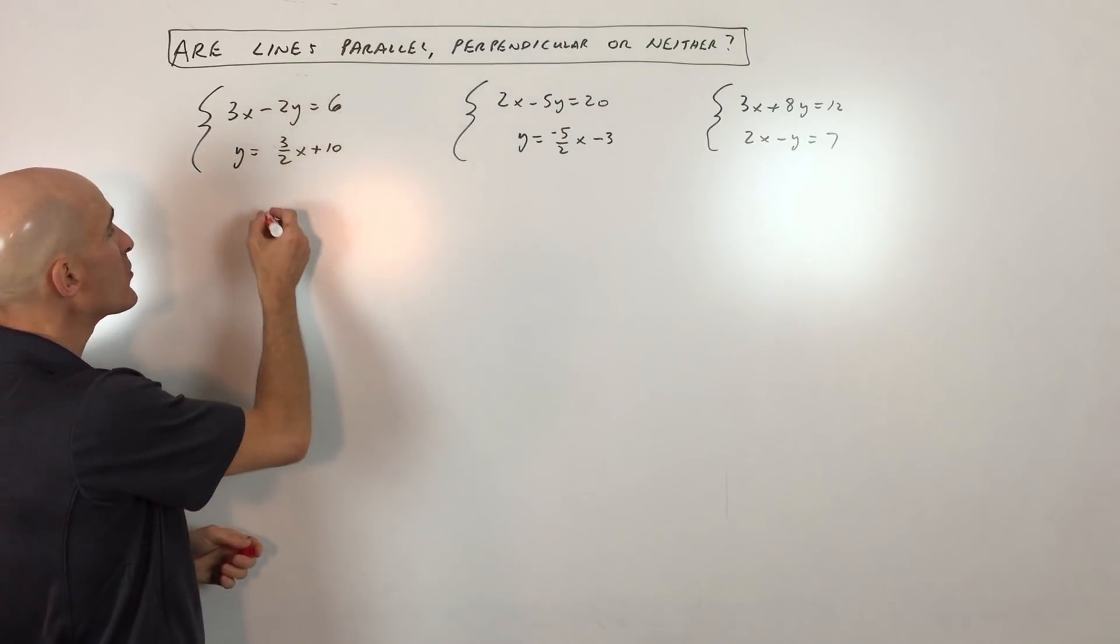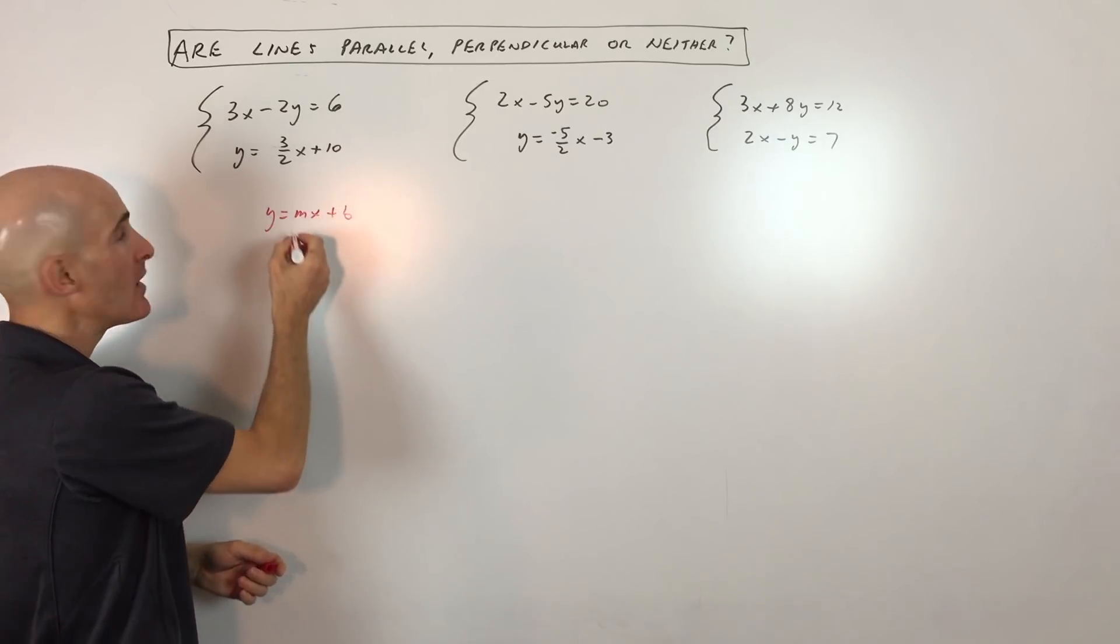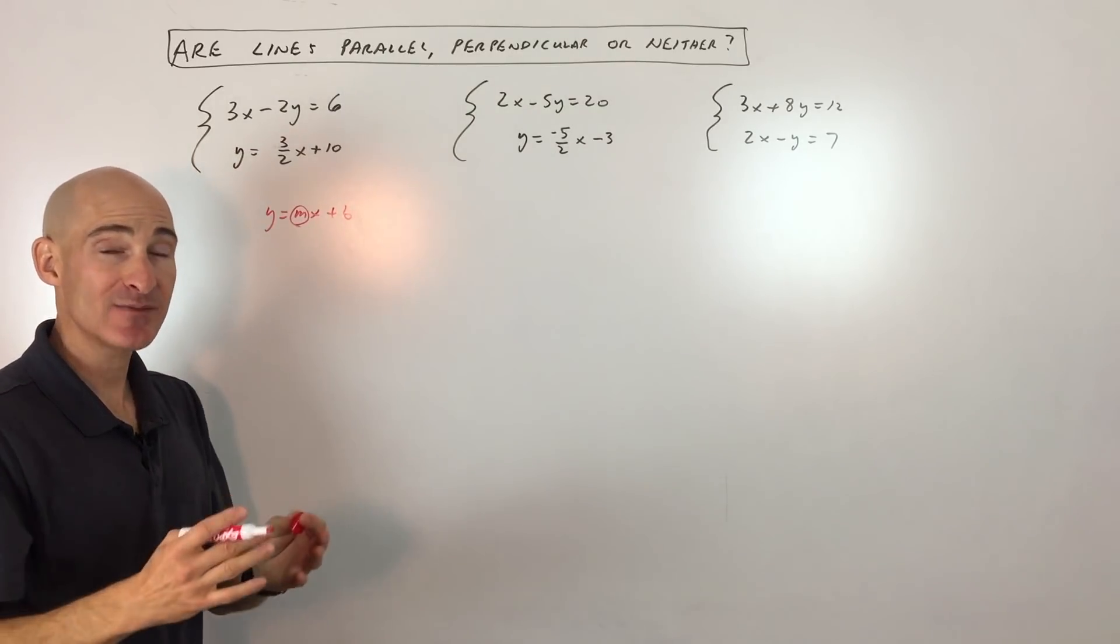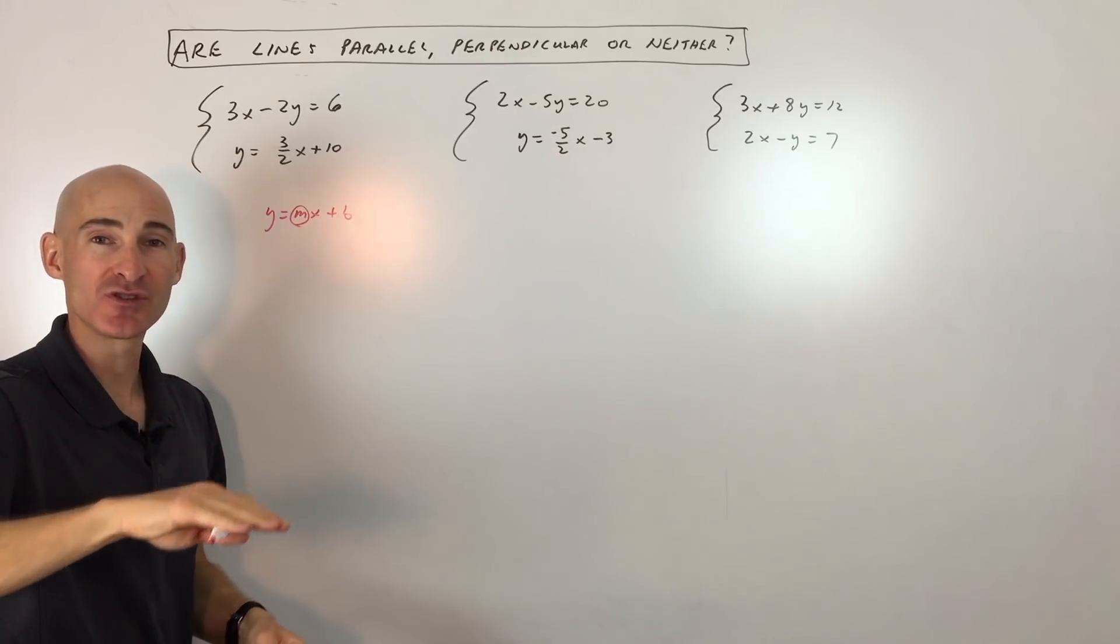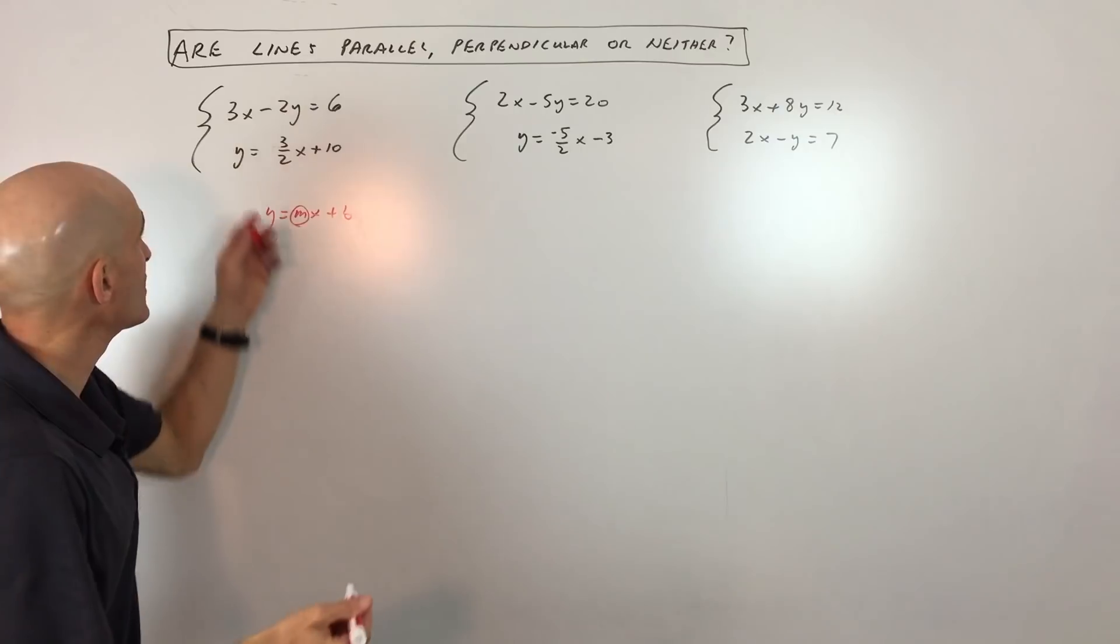And the key to this is really rewriting these equations in the y equals mx plus b form. Then the number that comes in front of, or to the left of the x, that's your slope. If they have the same slope, they're parallel. And if they have opposite reciprocal slopes, then that means they're perpendicular. Otherwise, they're neither. So let's get right into this one.